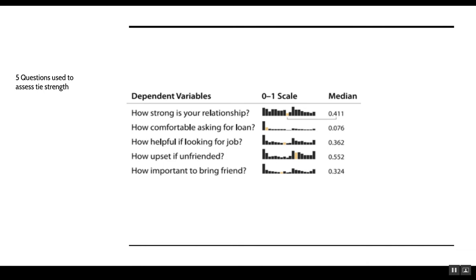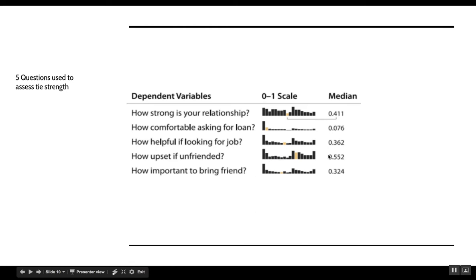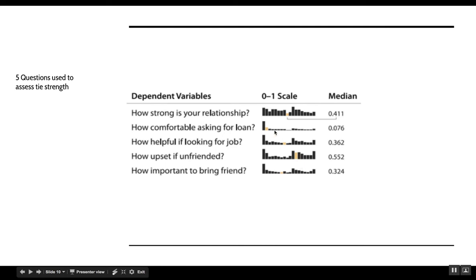How comfortable are you asking for a loan? Look at that—the median is 0.07. This means almost nobody would be asking for a loan, the $100 question. It suggests that while there are a few people who would be willing to ask their Facebook friend for $100, most would not. That's a powerful measure of intimacy. You also have how upset would you be if unfriended—there's a huge number of people on the left—and how important is it to bring a friend to some event. These three bottom ones are sort of in the middle, but this one about the loan is really interesting.